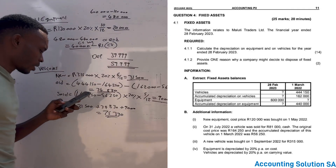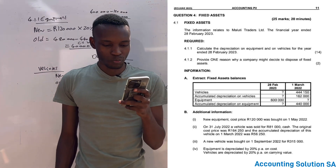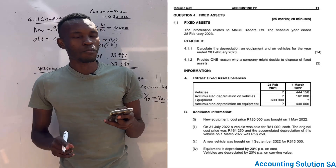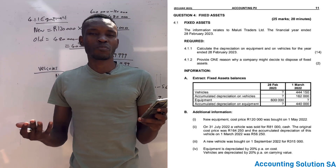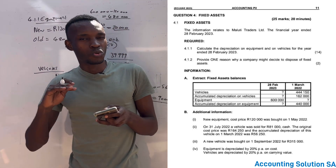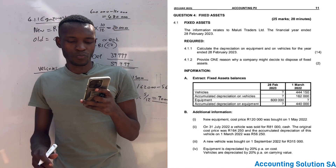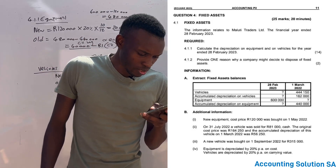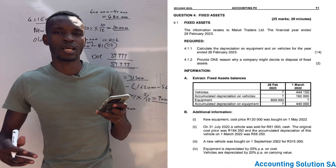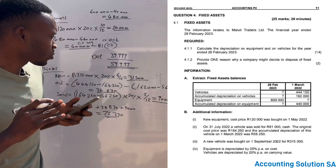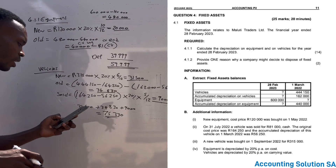The next question asks: provide one reason why a company might decide to dispose of a fixed asset. One valid reason is that the asset is outdated - for example, we now mostly use laptops and no longer use old computers, so we can sell the old computer to buy a new one. Another reason could be that we are looking for better technology or a better model. Any valid reason is acceptable.